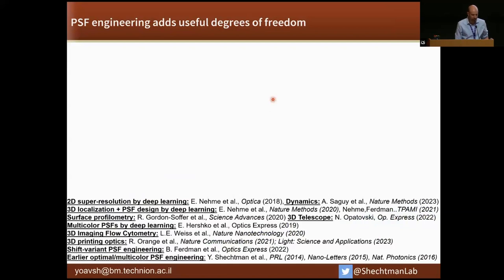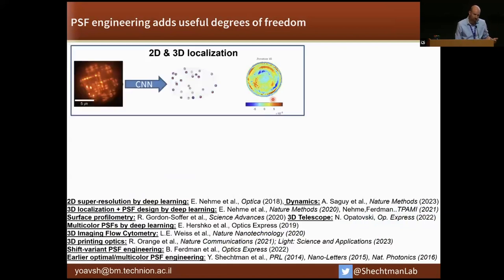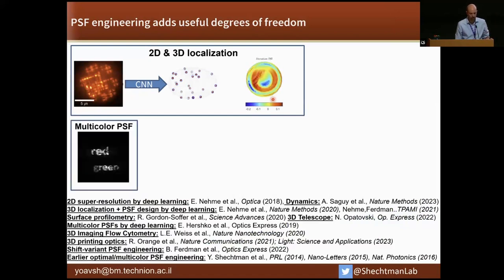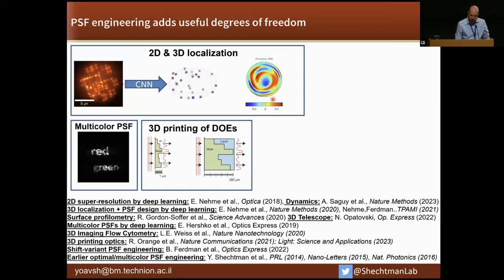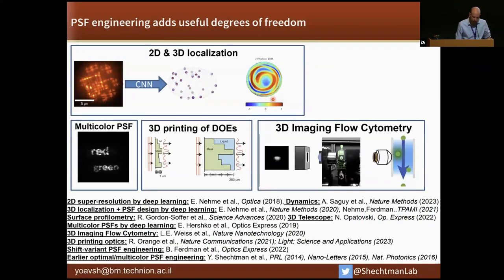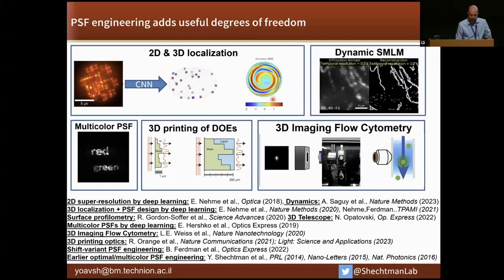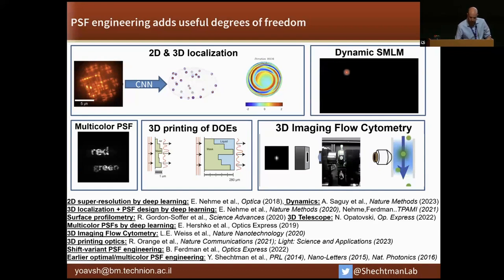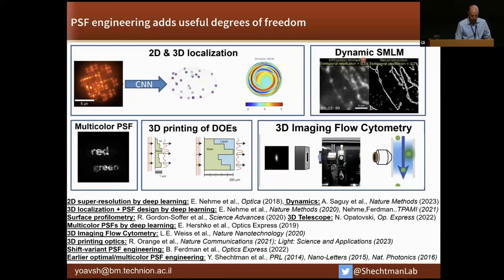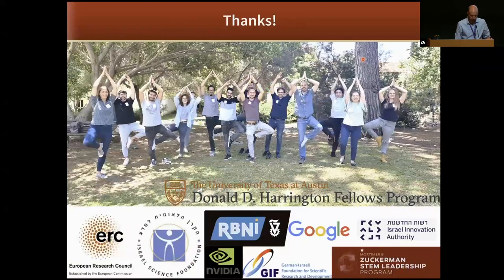To summarize, I hope I convinced you that PSF engineering adds useful degrees of freedom in localization microscopy and microscopy in general. Using neural nets, we can design optimal PSFs. We can control the spectral parameters of the PSF. We can 3D print these phase masks as well nowadays. I didn't go into 3D imaging flow cytometry, maybe next time. But I did tell you about the dynamics to do spatial temporal super resolution interpolation. These are the guys who did the work. Thank them. And I would like to thank the funding. Thank you all for listening.